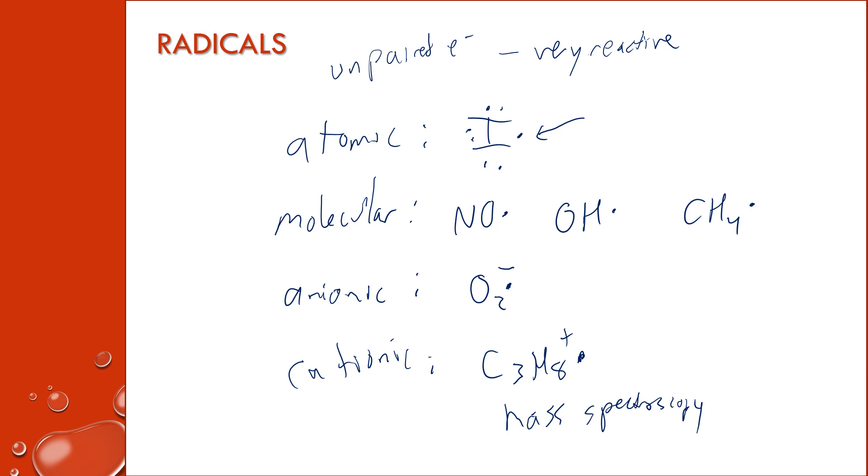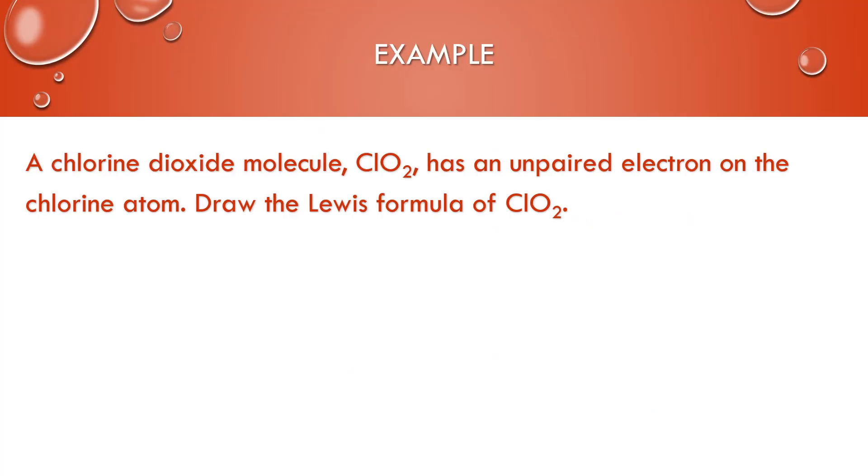Okay, so we have a chlorine dioxide molecule, ClO2, that has an unpaired electron on the chlorine atom. Draw the Lewis formula of the ClO2. So I want to use my rules for Lewis structures. I need to add up the valence electrons. There are seven valence electrons from chlorine and twelve valence electrons from the two oxygens, so I have nineteen total.